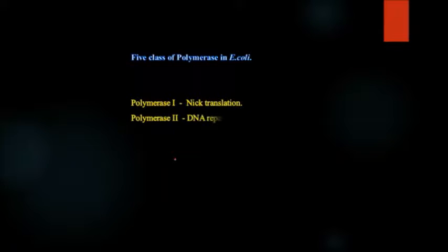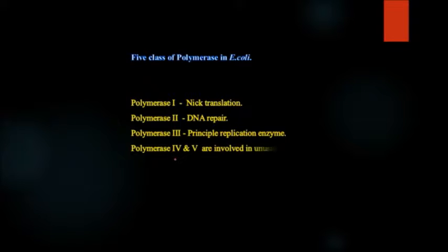Five major classes of polymerase are found in E. coli. These are polymerase one, which is specialized for nick translation as I have discussed. Polymerase two, it is for DNA repair. Polymerase three, it is the principal replication enzyme, and polymerase four and five are involved in unusual DNA repair.